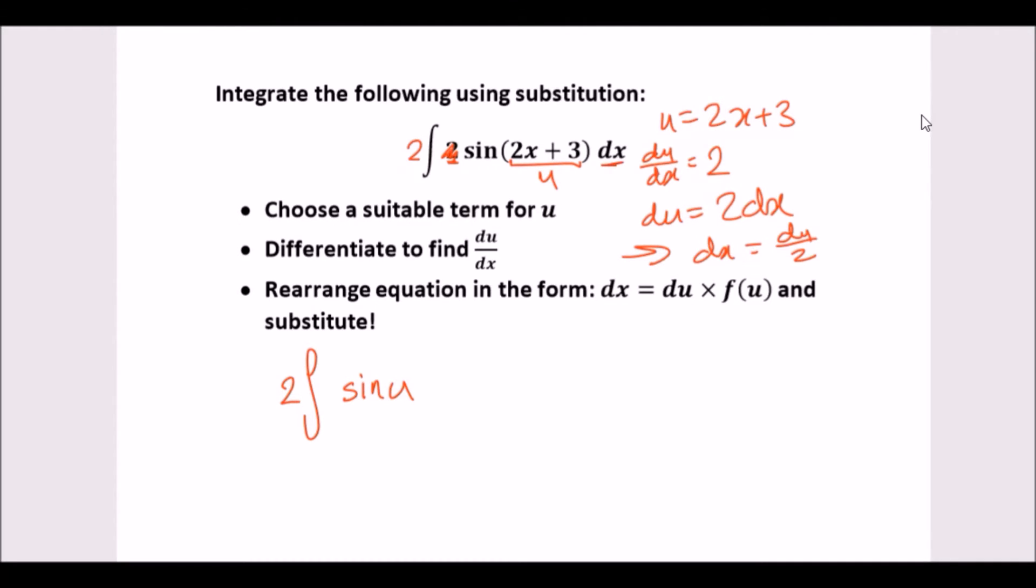And then what happens to dx? Well, dx now becomes du over 2. Sin u times du over 2. This 2 can also go outside, so now we're going to have 2 over 2 outside. Actually, these two cancel out, so we have the integral of sin u du. Voila, easy! We're pretty much done now.